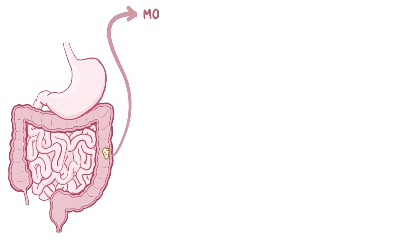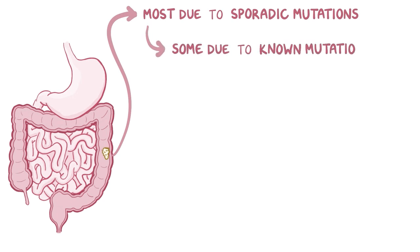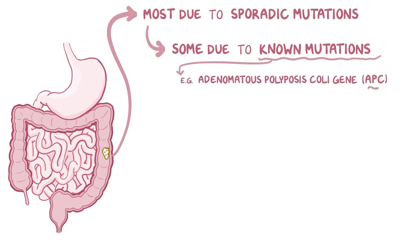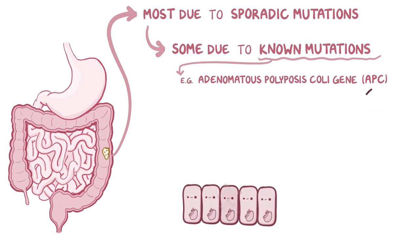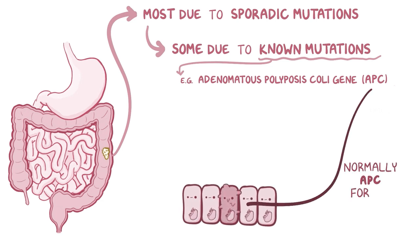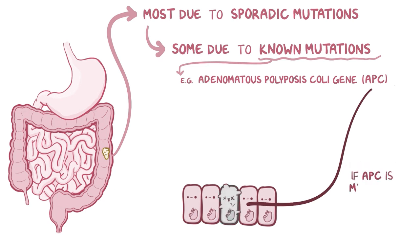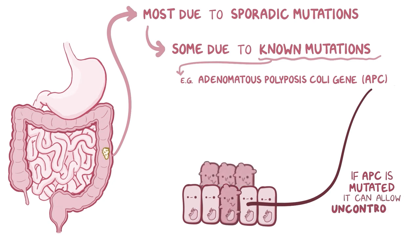Most cases of colorectal tumors happen because of sporadic mutations, but a small number are caused by known genetic mutations that run in a person's family. An example of this is the adenomatous polyposis coli gene, or APC gene, which is a tumor suppressor gene. Normally, the APC protein identifies when a cell is accumulating a lot of mutations and forces it to undergo apoptosis, or programmed cell death. But when the APC gene is mutated, the mutated bowel cells don't die, and instead some start dividing uncontrollably, giving rise to polyps.